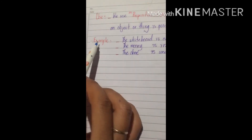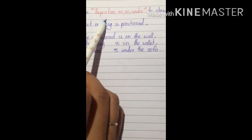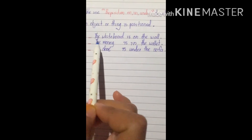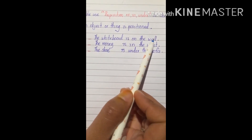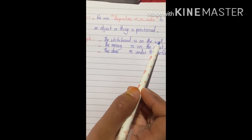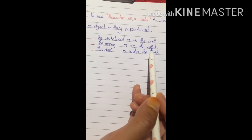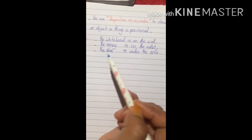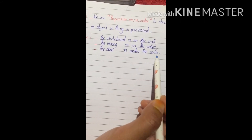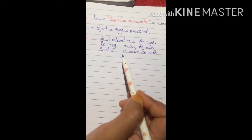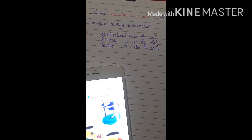Here are three more examples: the whiteboard is on the wall; the money is in the wallet; the shoes are under the sofa. Please write down the lesson into your book.